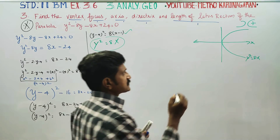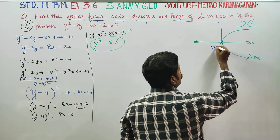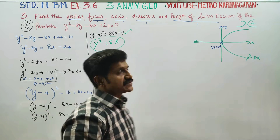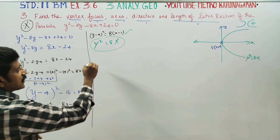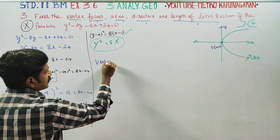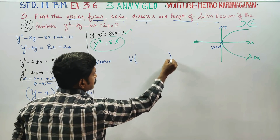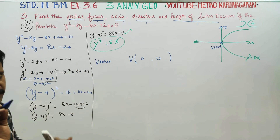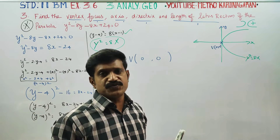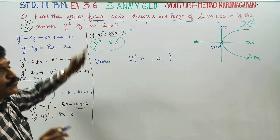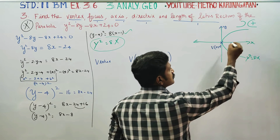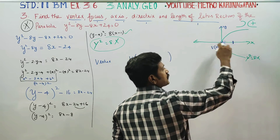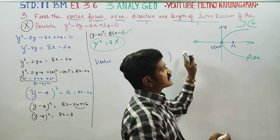So one formula will be introduced. First, vertex: the vertex is at the origin, x-axis, y-axis. For the standard form Y squared = 4ax, the vertex is (0, 0). Focus is focused on the x-axis. The y value of the focus is 0.